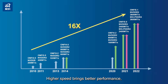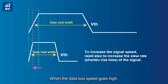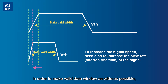Higher speed brings better performance, but also comes with a number of challenges as well. To increase the data bus speed is not just about increasing the frequency. When the data bus speed goes high, in order to make the valid data window as wide as possible, the slew rate of the signal also needs to be increased.